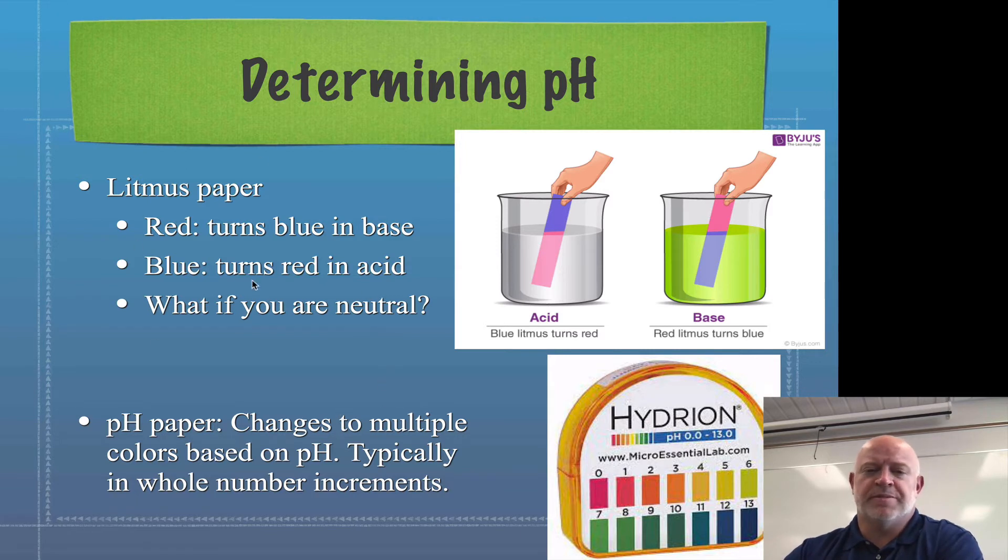Now, along the same lines, there's stuff out there called pH paper. pH paper looks a lot like litmus paper, like strips of filtered paper. If you happen to have a pool or a hot tub or have seen anybody work on that kind of stuff, they sometimes use little strips of paper to test the water. It looks similar to that.